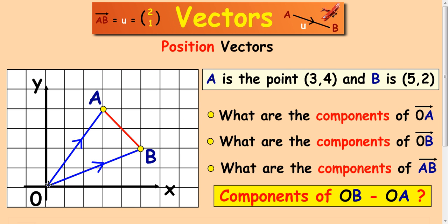If we were to work out the components of the vector OA, then it's exactly the same as a coordinate: three along, four up. The vector OA would be (3,4) in column format.